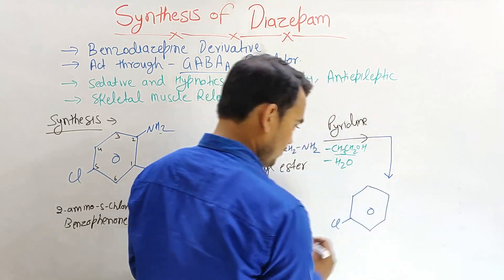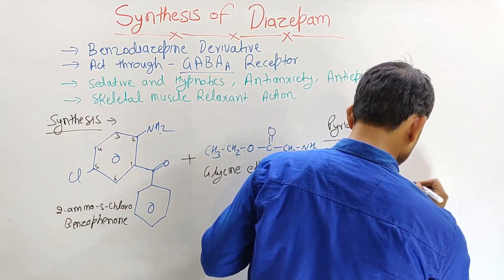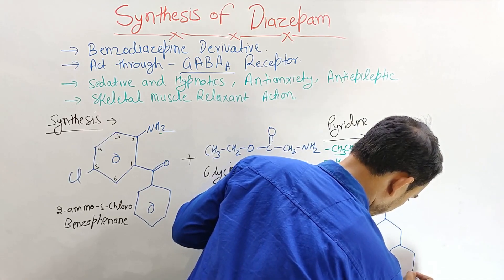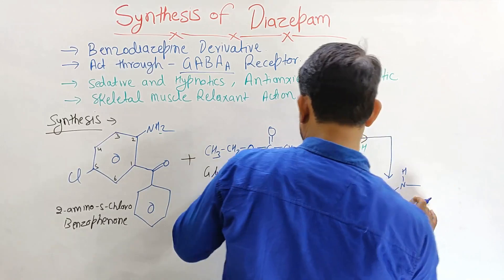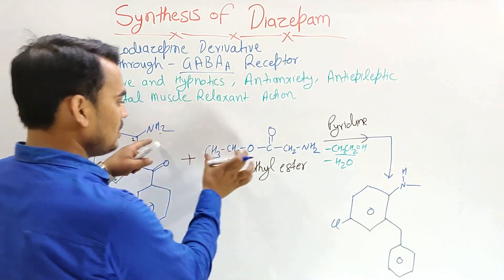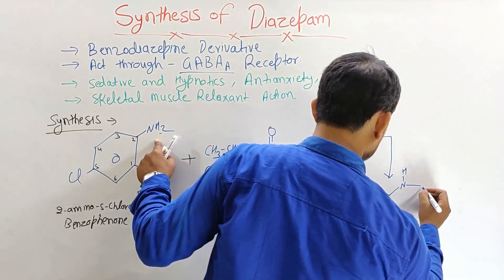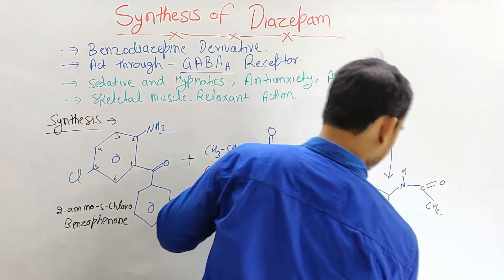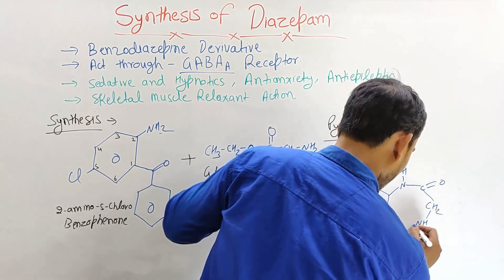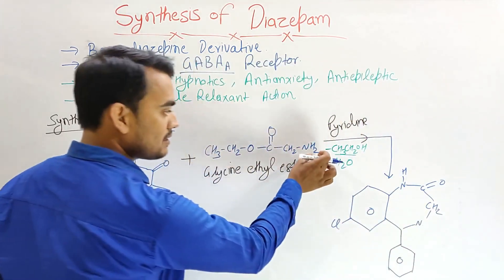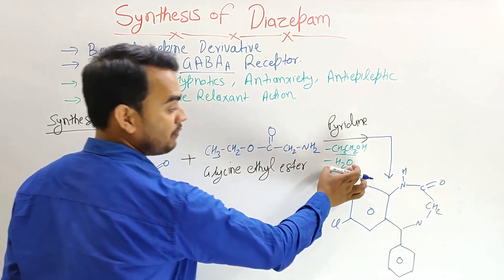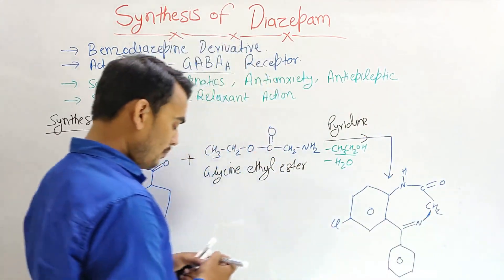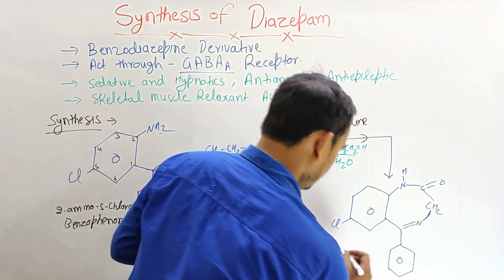Let's draw the structure that forms. The chloro group remains on the ring. The C=O is retained, then CH2, then NH is formed. Two molecules of hydrogen take the oxygen and remove it as water, forming a double bond. This structure is known as nordiazepam.